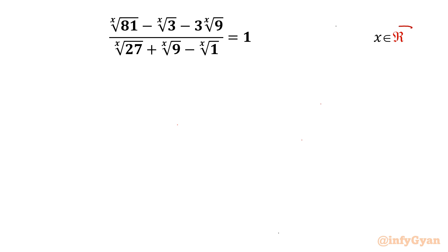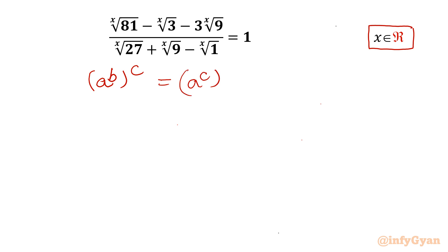We have to find out real solutions only. Let's get started by writing one exponent property which states that (a^b)^c is nothing but (a^c)^b. This is a very powerful identity we will use while solving the problem. Also, x-th root of 1 — we know that 1^x equals 1 for all x belonging to real numbers, so in that place I can write 1.